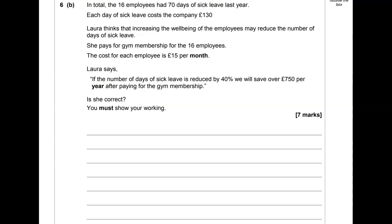This is part B of question 6. In total, the 16 employees had 70 days of sick leave last year. Each day of sick leave cost the company £130. Laura thinks that increasing the wellbeing of the employees may reduce the number of days of sick leave. She pays for gym membership for the 16 employees. The cost for each employee is £15 per month. Laura says, if the number of days of sick leave is reduced by 40%, we will save over £750 per year after paying for gym membership. Is she correct? We must show your working.